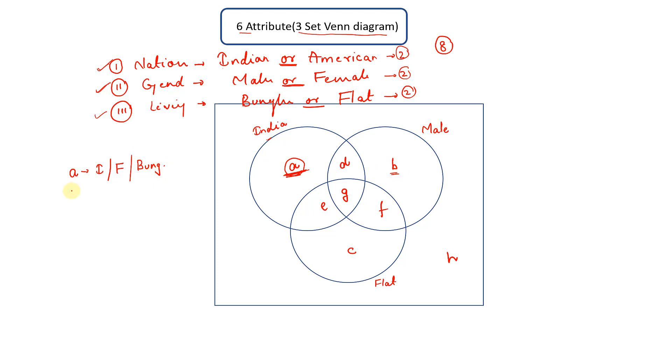Similarly b. What would b be? B would be a person who is not an Indian, so a person who is not an Indian would be American. He would be male and it is outside the flat circle, so living in bungalow.